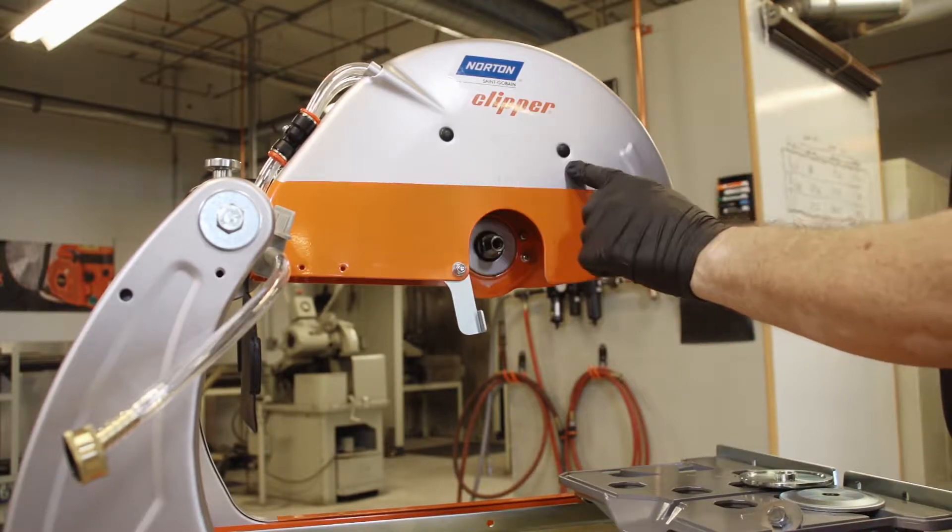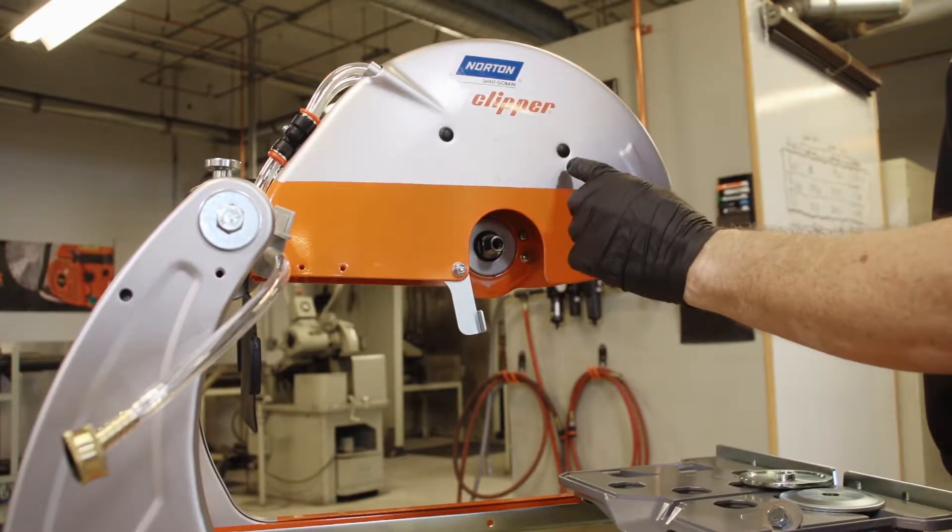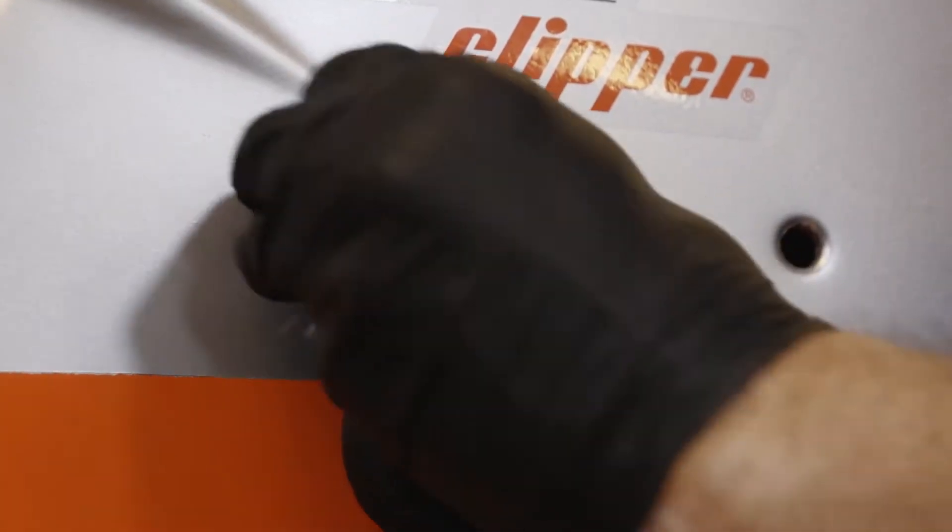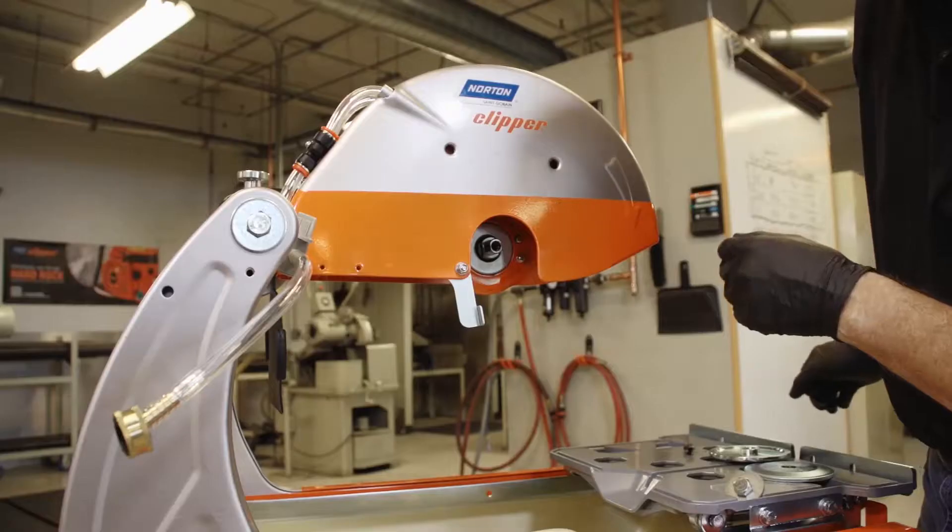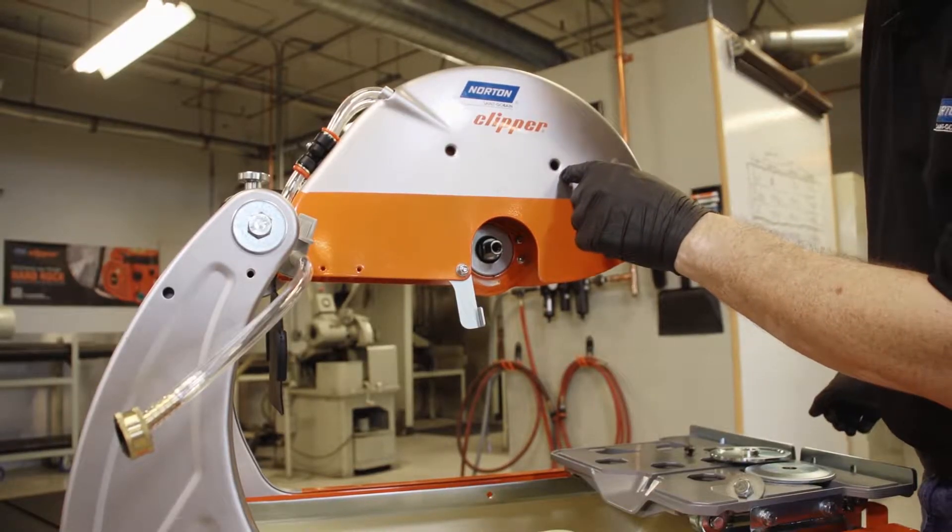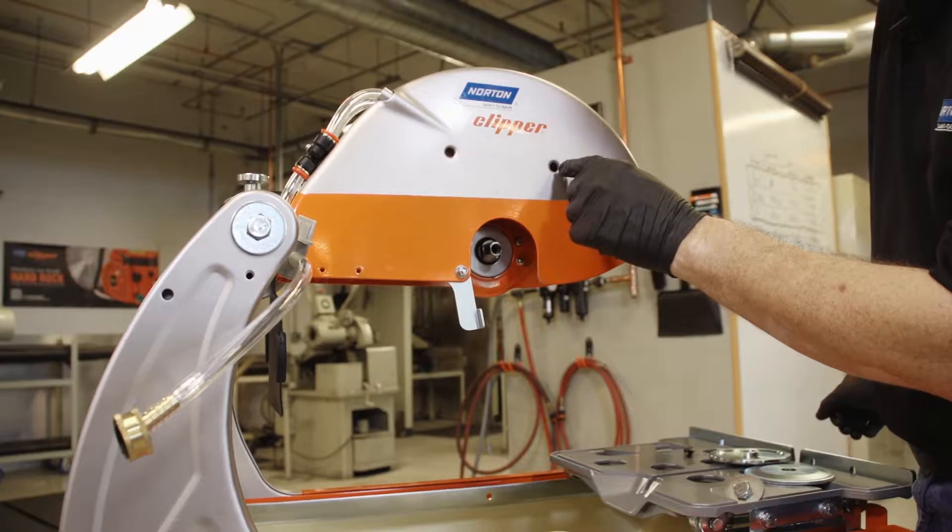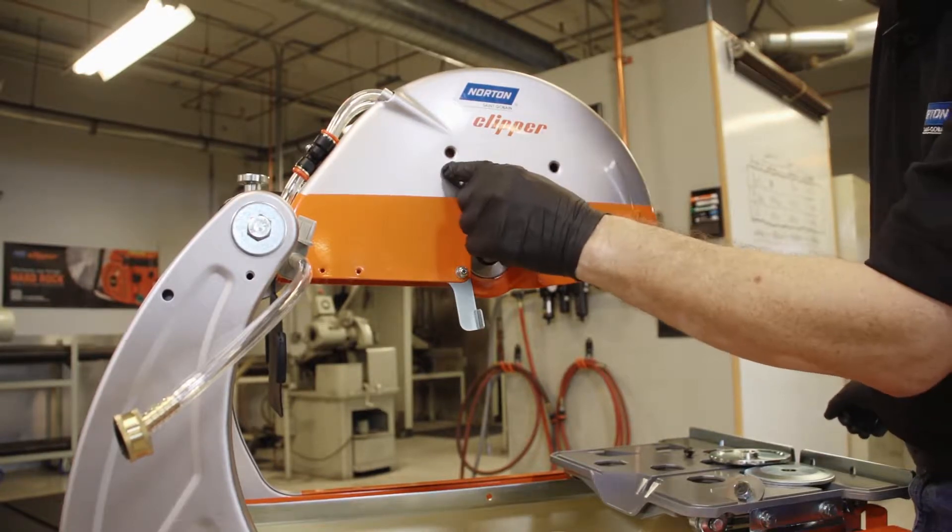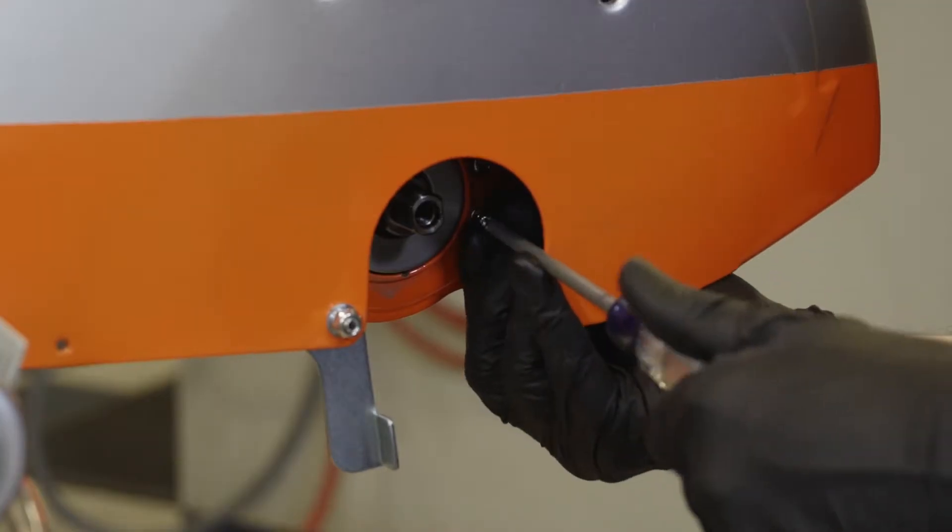Now remove the two caps that cover the two blade guard retaining screws. Now we'll take a Phillips head screwdriver and remove the screws located in this hole and this hole. Then we remove the bottom two blade guard retaining screws.